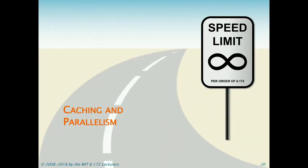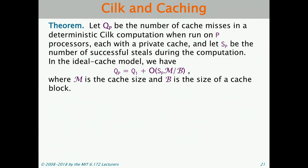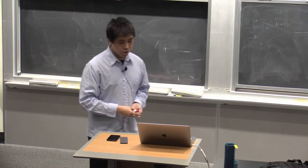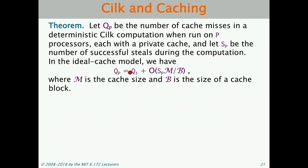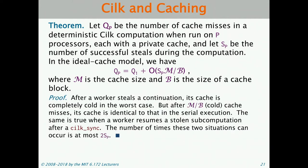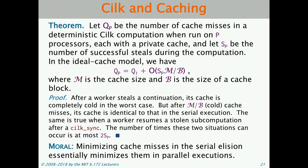Regarding the interplay between caching and parallelism: a key theorem states that cache misses on P processors equals cache misses on 1 processor plus O(successful steals · M/B). The number of successful steals is bounded by span × P. For low-span algorithms, the Q1 term dominates, so minimizing cache misses in the serial elision essentially minimizes them in parallel execution. The moral: designing cache-efficient serial code benefits parallel performance.